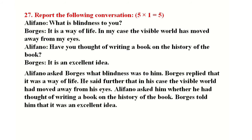The reported speech answers are as follows: Alphano asked Vargas what blindness was to him. Vargas replied that it was a way of life. He said further that in his case the visible world had moved away from his eyes. Alphano asked him whether he had thought of writing a book on the history of the book. Vargas told him that it was an excellent idea.